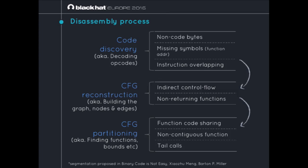The second step is control flow graph reconstruction — creating the nodes and edges to encode the flow of the program. This implies dealing with indirect control flow like dynamic jumps, and functions that are never returning. The last step is partitioning: trying to create segmentation into the control flow graph to create different functions. Recovering functions is difficult because functions can share parts of their code, might not be contiguous in the binary, and it implies dealing with tail calls — calling a function by making a single jump.